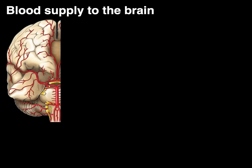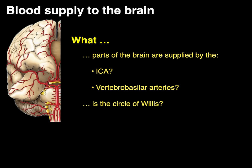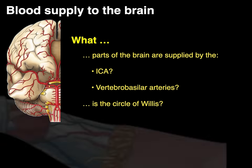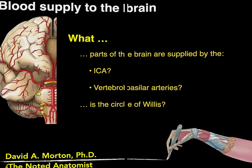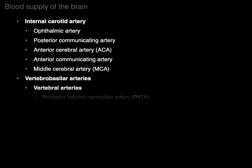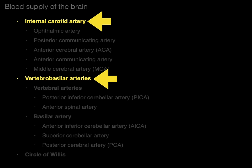We're going to talk about blood supply to the brain and answer the questions: what parts of the brain are supplied by the internal carotid and vertebral basilar arteries, and what is the circle of Willis? My name is Dr. Morton, and I am the noted anatomist. Here are the different arteries that supply the brain that we're going to talk about, focusing on the internal carotid and vertebral basilar arteries.